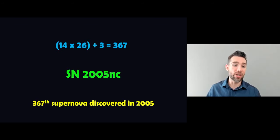Probably easier to show you an example. So because N was the 14th letter, you times that by 26, which is how many letters are in the alphabet. And then you add the three because it's the position in the alphabet at the end. So that gives you 367, which means SN 2005 NC is the 367th supernova discovered in 2005.